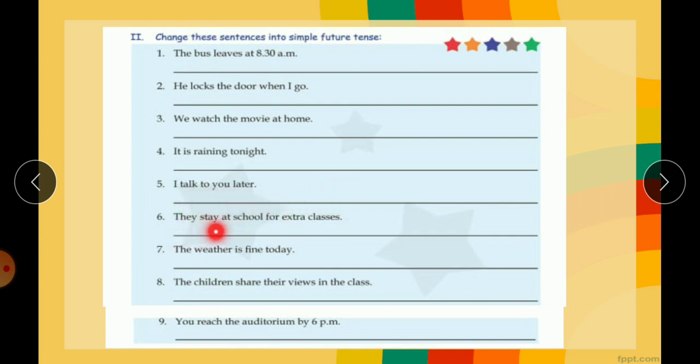They stay at school for extra classes. What is the verb? Stay. So you will put will in front of it. They will stay at school for extra classes. The weather is fine today. The weather will be fine today. Because here is will be changed to be, and it will be will be fine today.